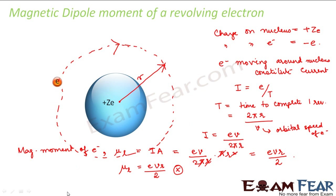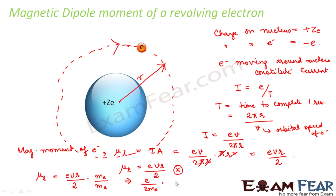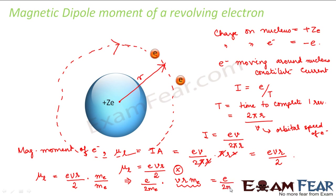This magnetic moment can be further written by multiplying the numerator as well as denominator with the mass of the electron m_e. So we get: μ_L equals (e divided by 2m_e) times (v times r times m_e). Now m_e·v·r is nothing but the angular momentum of the electron L, so μ_L equals (e divided by 2m_e) times L, where L is the magnitude of the orbital angular momentum.